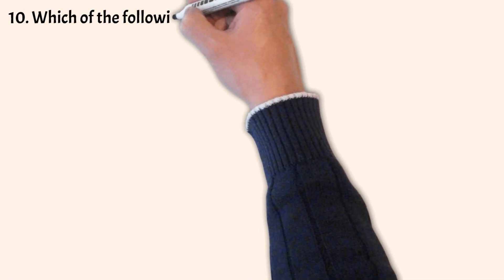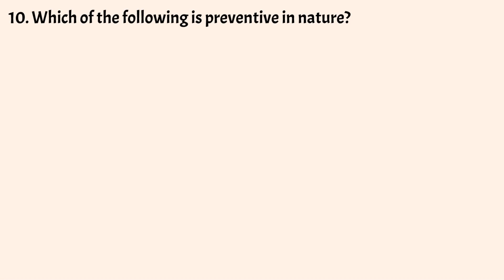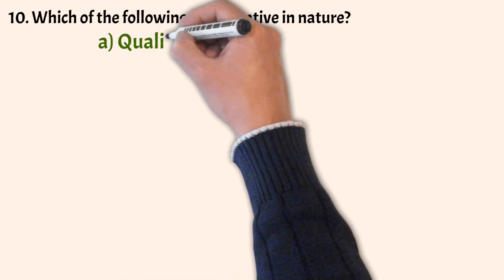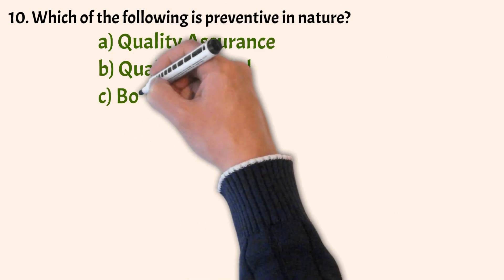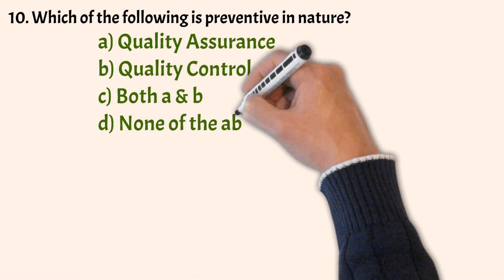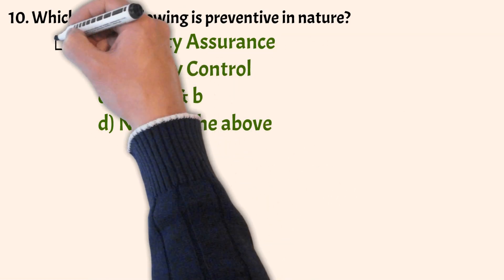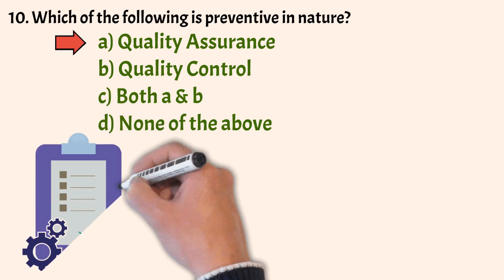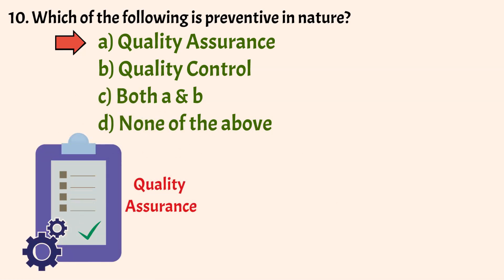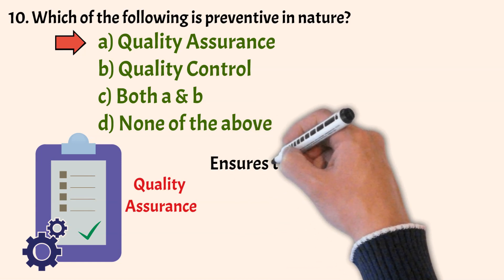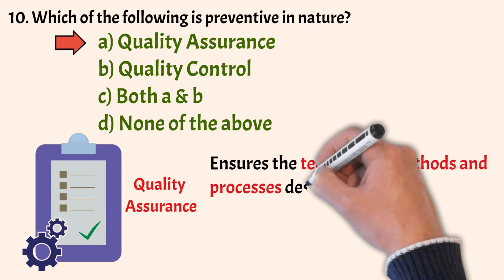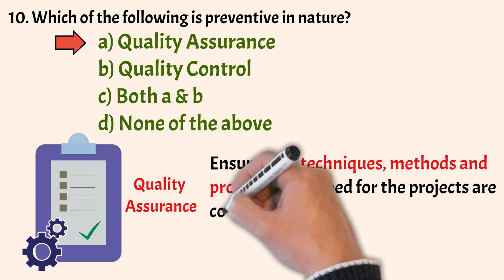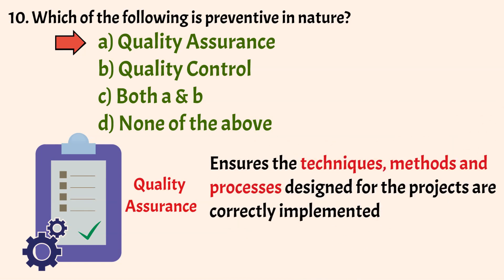Next question: Which of the following is preventive in nature? Options: Quality Assurance, Quality Control, Both A and B, and None of the above. The correct answer is Option A, Quality Assurance. Quality Assurance comes before Quality Control and ensures that the techniques, methods, and processes designed for the projects are correctly implemented. It recognizes flaws in the process, focuses on the prevention of defects, and thus Quality Assurance is preventive in nature.